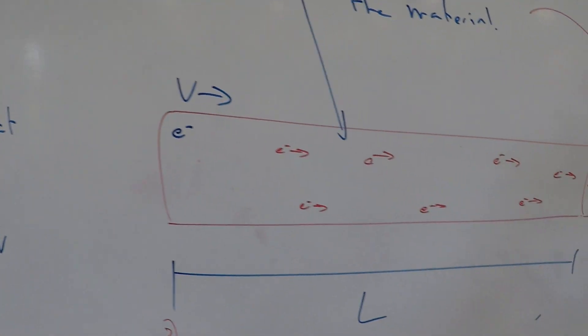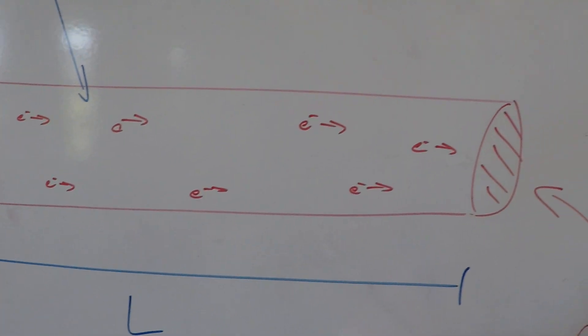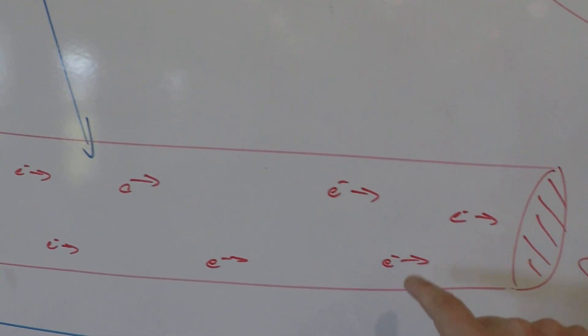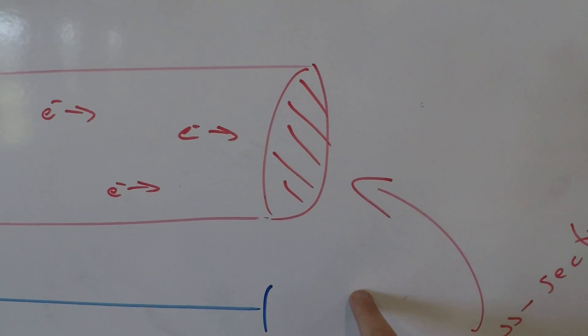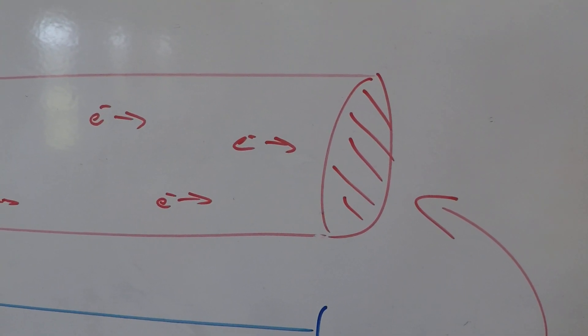So here's a wire, and it's got a length of L, and our electrons are flowing through it, and they've got a velocity of V, and then the wire has also got a cross-sectional area here, A.